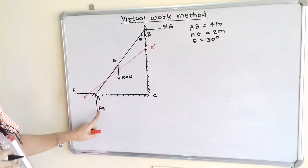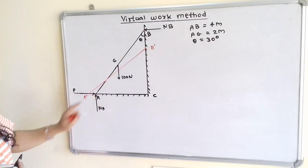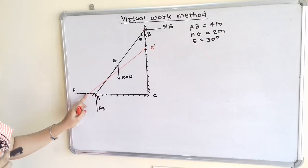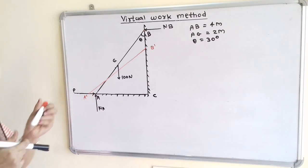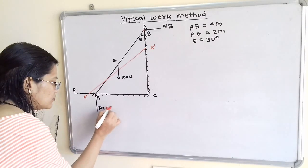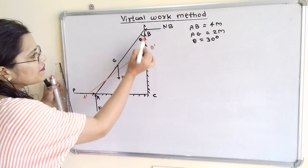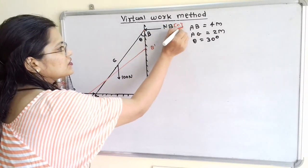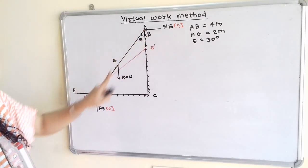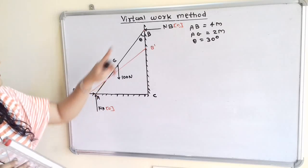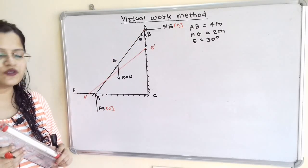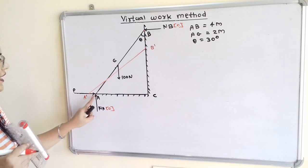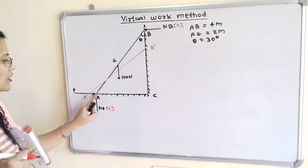To find the displacements at various points: at point A, the normal reaction N_A acts vertically while the ladder moves horizontally, so displacement along N_A is zero. At point B, the ladder moves along the vertical line and N_B is horizontal, so displacement along N_B is also zero. Therefore we do not need to consider N_A and N_B in the virtual work equation, and there is no frictional force since the surfaces are smooth.